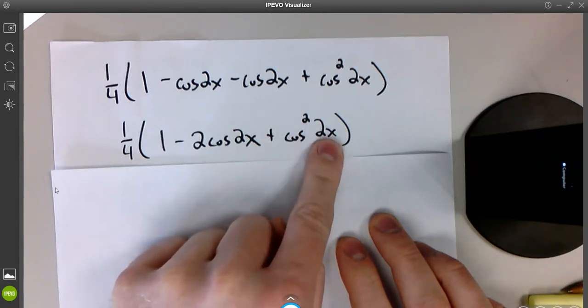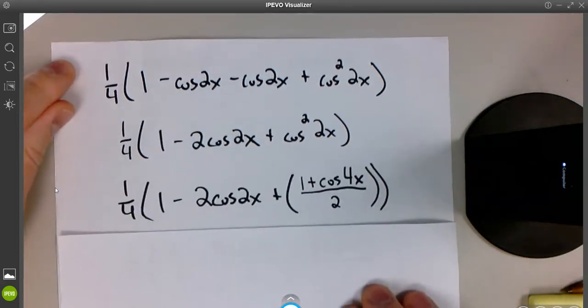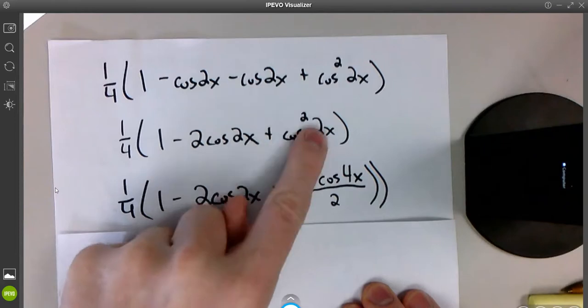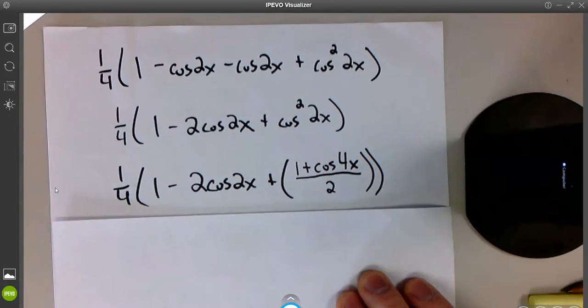But this time, since it's a 2x, when I run it through the formula, it doubles and will become 4x. So there's me running the cosine squared 2x through the power reducing formula again. Now I have cosine squared. It goes to cosine to the first.